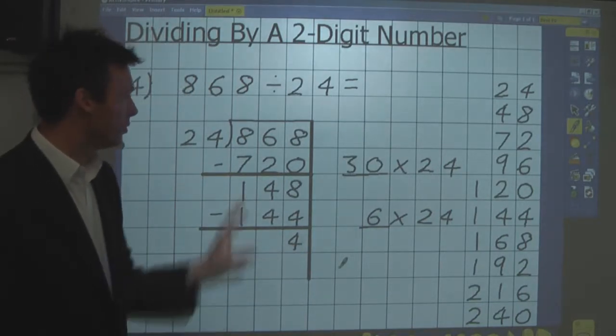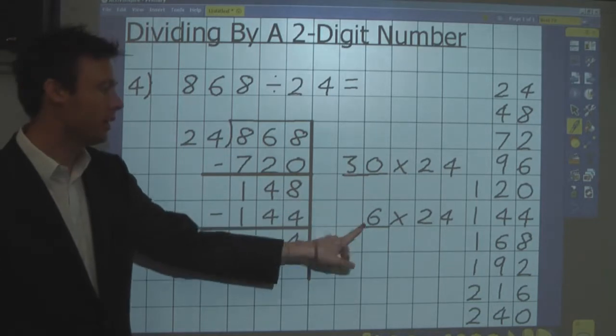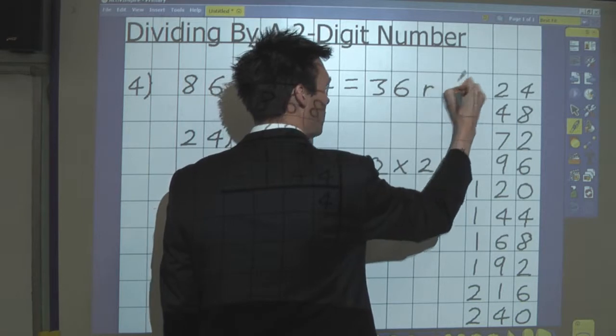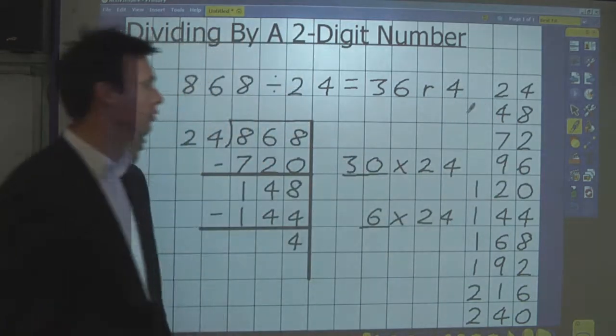How many lots of 24 did I take away? 36. So my answer is 36, remainder 4.